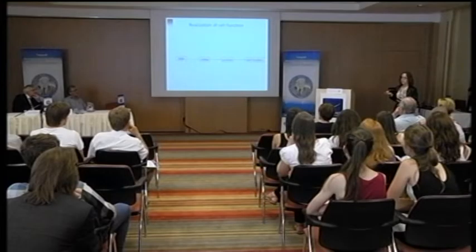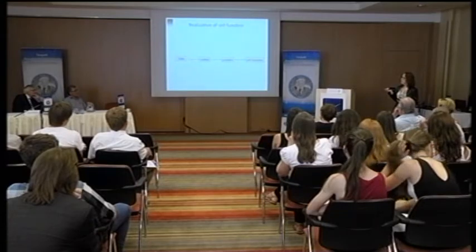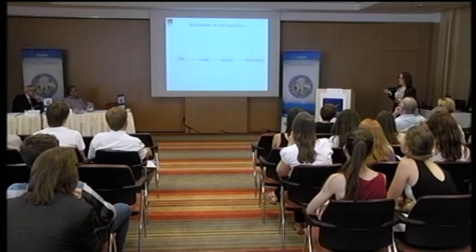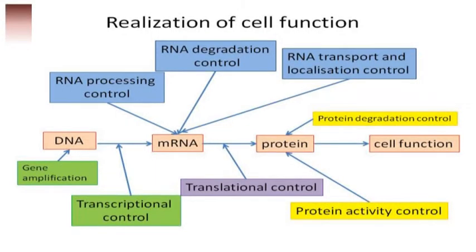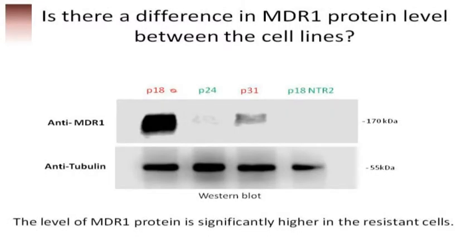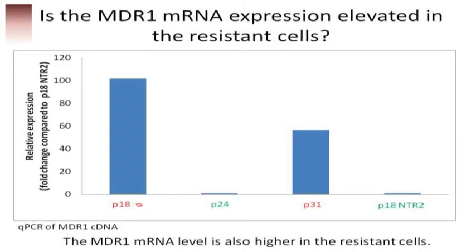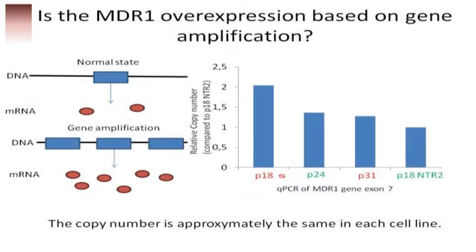As we know, information in cells flows in the direction of DNA → mRNA → protein → cell function, and there are many steps at which this process can be regulated. Our first goal was to find which step is crucial here. We found that MDR1 protein levels are much higher in resistant cell lines than in sensitive ones, and mRNA levels are similarly elevated — up to 100 times higher. One possible explanation is gene amplification, but we found no evidence of it, as the copy number was approximately the same across all cell lines.